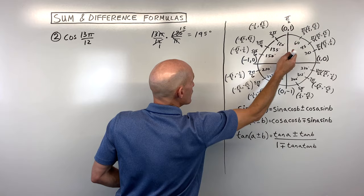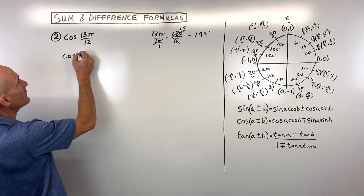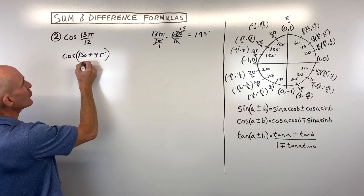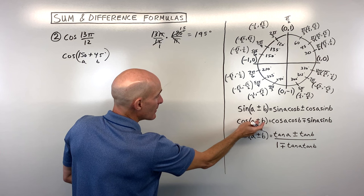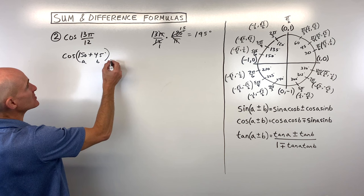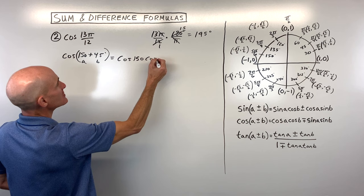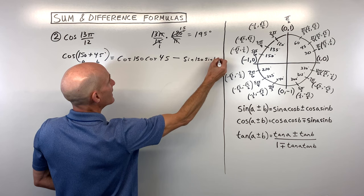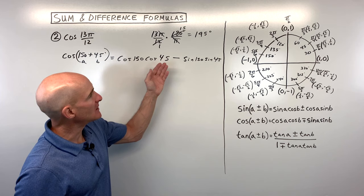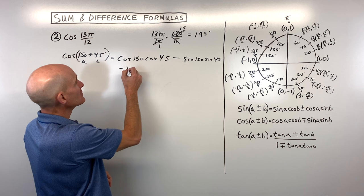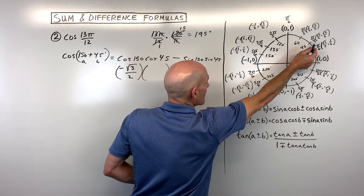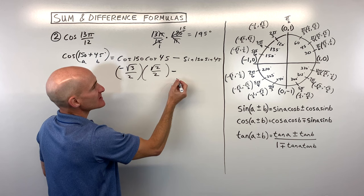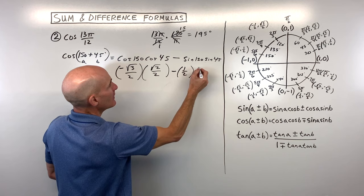Let's rewrite this as the cosine of 150 plus 45, where A is 150 and B is 45. Using the cosine sum formula — remember, cosine is the opposite, so when adding, we subtract on the right — this becomes: cosine(150) × cosine(45) − sine(150) × sine(45). From the unit circle: cosine(150) = −√3/2, cosine(45) = √2/2, sine(150) = 1/2, and sine(45) = √2/2.